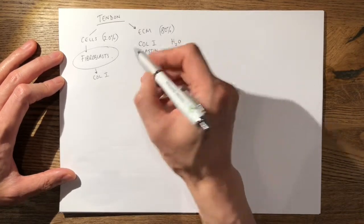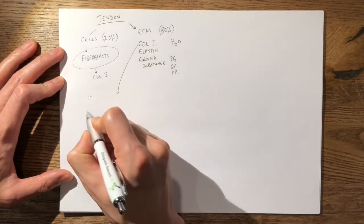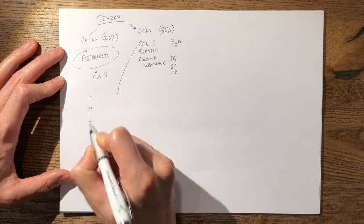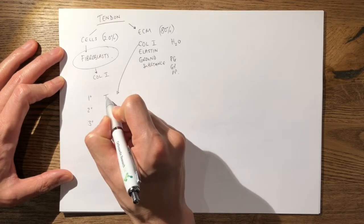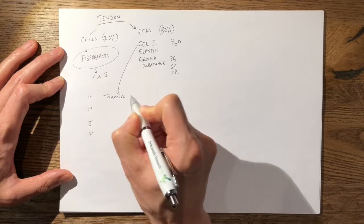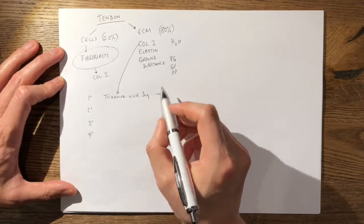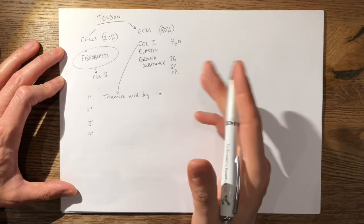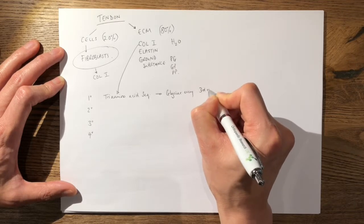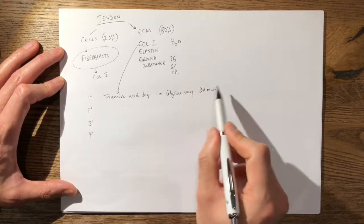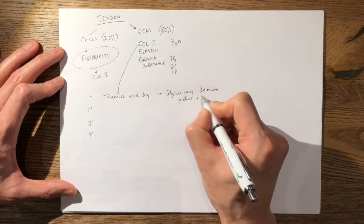Thinking about the collagen microscopic structure in terms of its primary structure: the primary structure is a tri-amino acid sequence. Every third residue is a glycine, and interspersed between the glycines is proline and hydroxyproline.